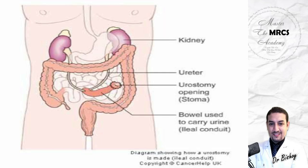Formation of a urostomy requires an ileal conduit — a segment of viable ileum made into a tube. One end is open and used as a stoma; the other end is closed as a reservoir. The ureters are implanted into this isolated segment of small bowel. The open end is everted to create a spout similar to an ileostomy, diverting urine from the kidneys to outside the abdomen, collected by a stoma bag.